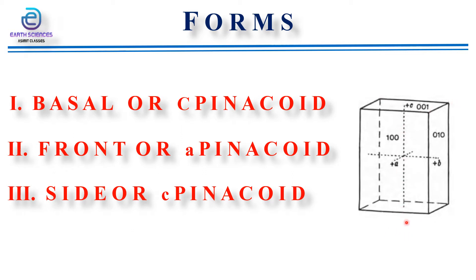The second type of pinacoid is the front or a pinacoid. A face parallel to the vertical axis and to the b axis requires an opposite face to complete the form. This gives the a pinacoid, distinguished as the front or a pinacoid since it cuts the a axis. The symbols of the two faces are (100) and (1̄00) for the back face. This form was formerly also called the macro pinacoid.